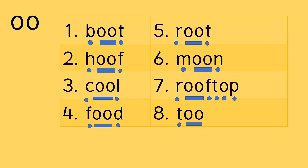Number seven — we've got two words here pulled together. We read the first bit: R, OO, F — roof. And we've got T, O, P — top. Roof, top — rooftop. Number eight — oh, there's an easy one, we've only got two phonemes: T, OO — two.